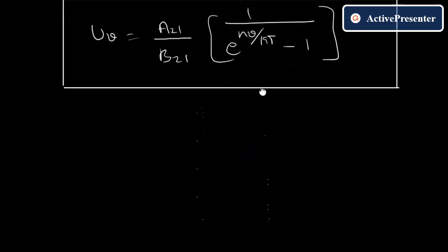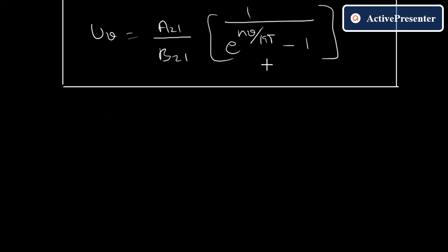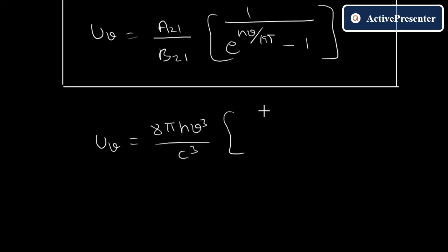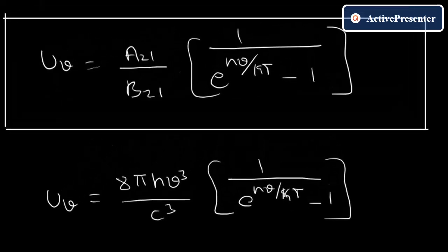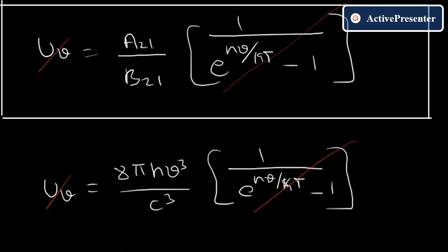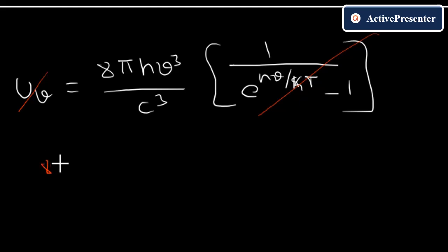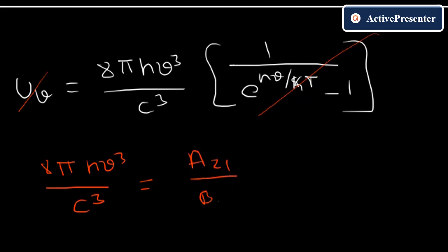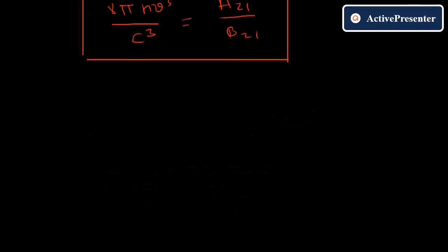We now compare this derived equation with Planck's radiation equation: u(ν) = (8πhν³/c³) · 1/(e^(hν/kT) − 1). Comparing both equations, the common factor 1/(e^(hν/kT) − 1) cancels out, leaving the relation: A21/B21 = 8πhν³/c³.